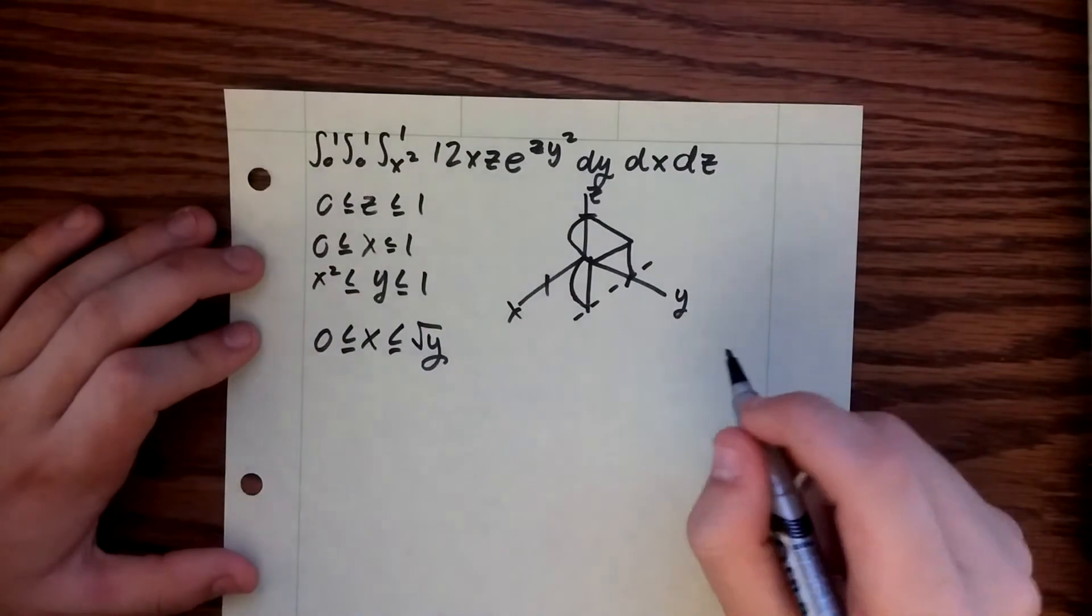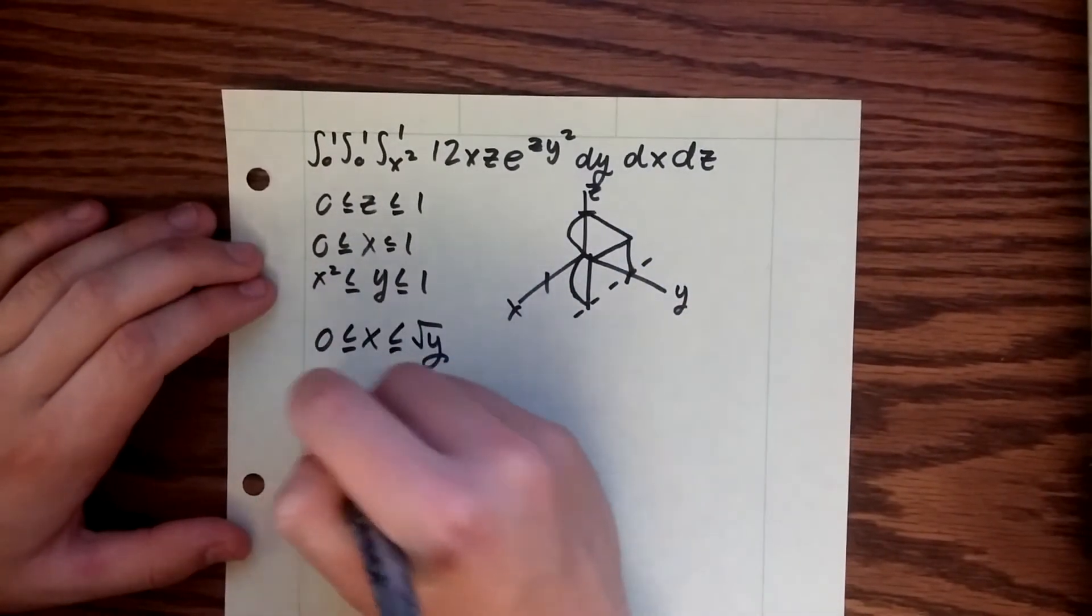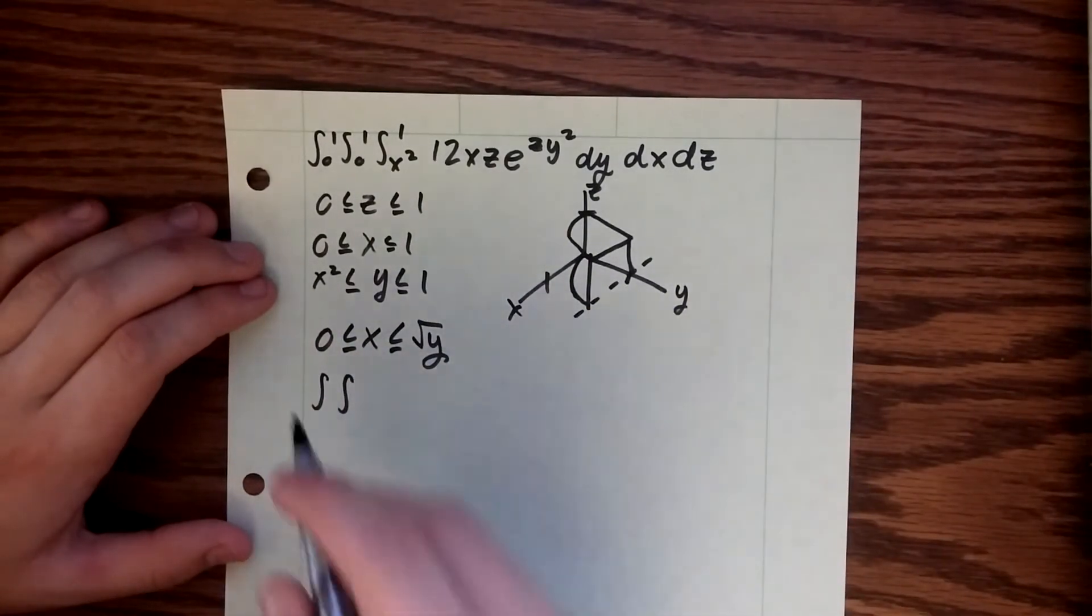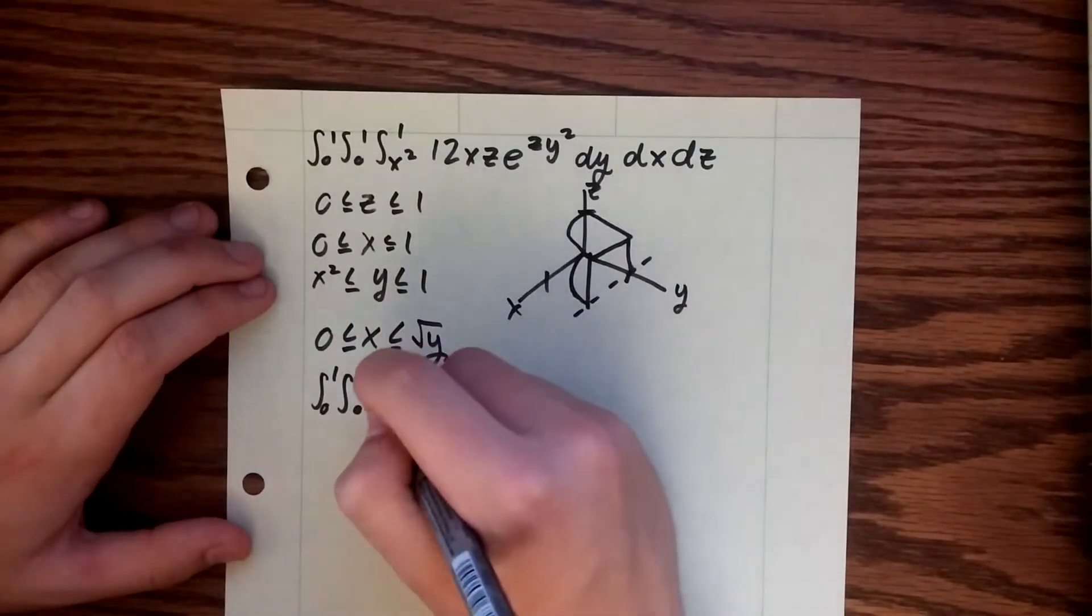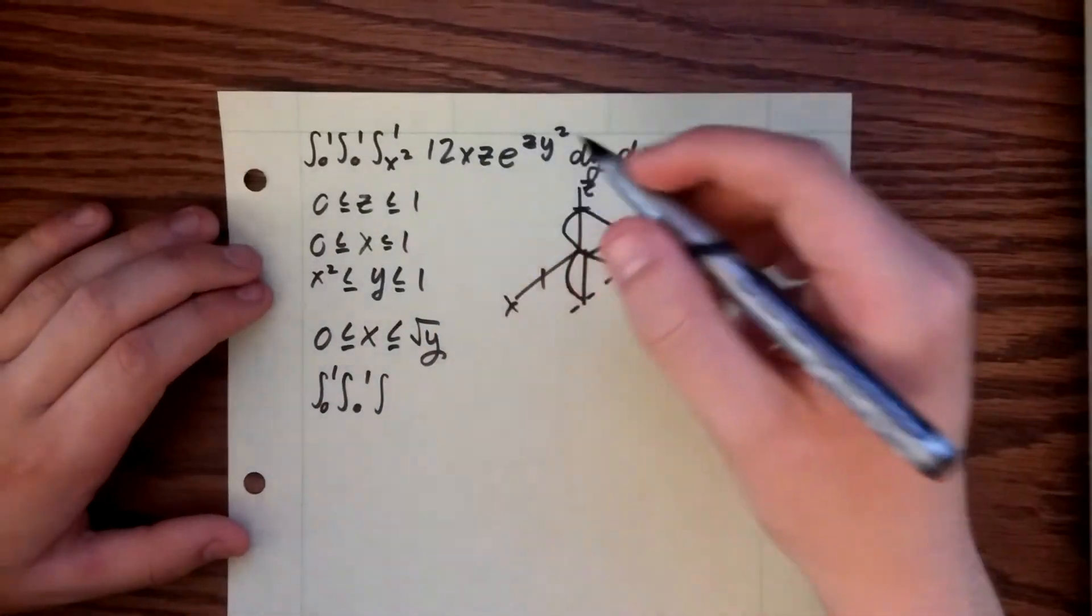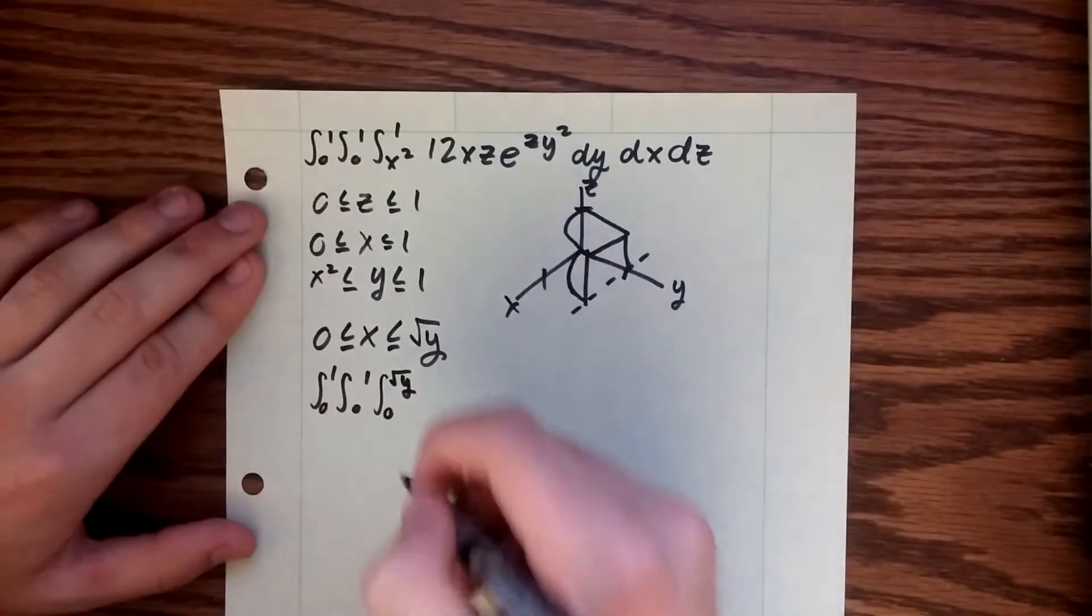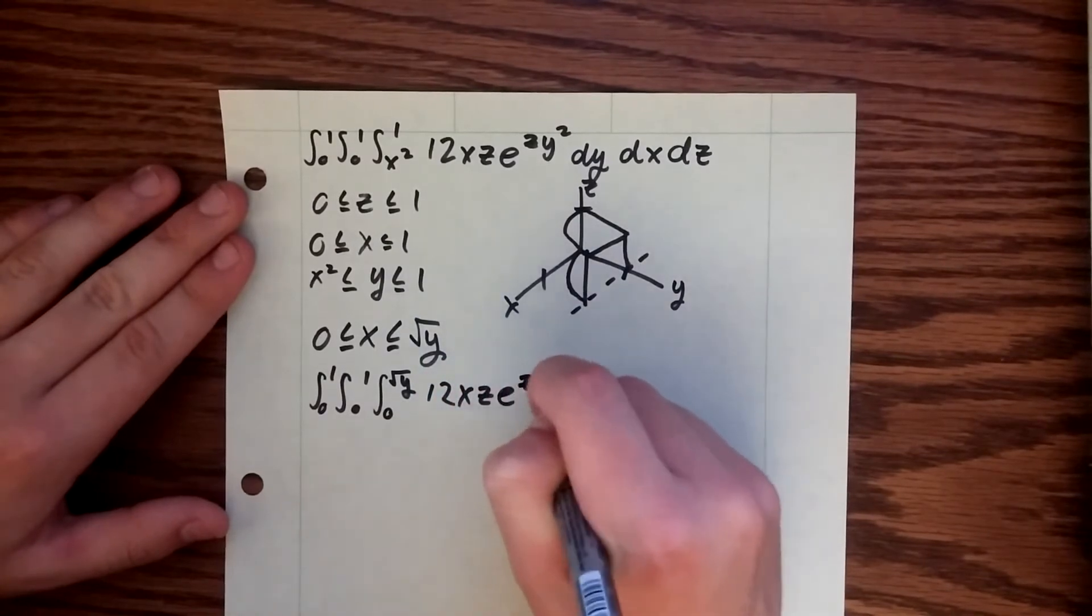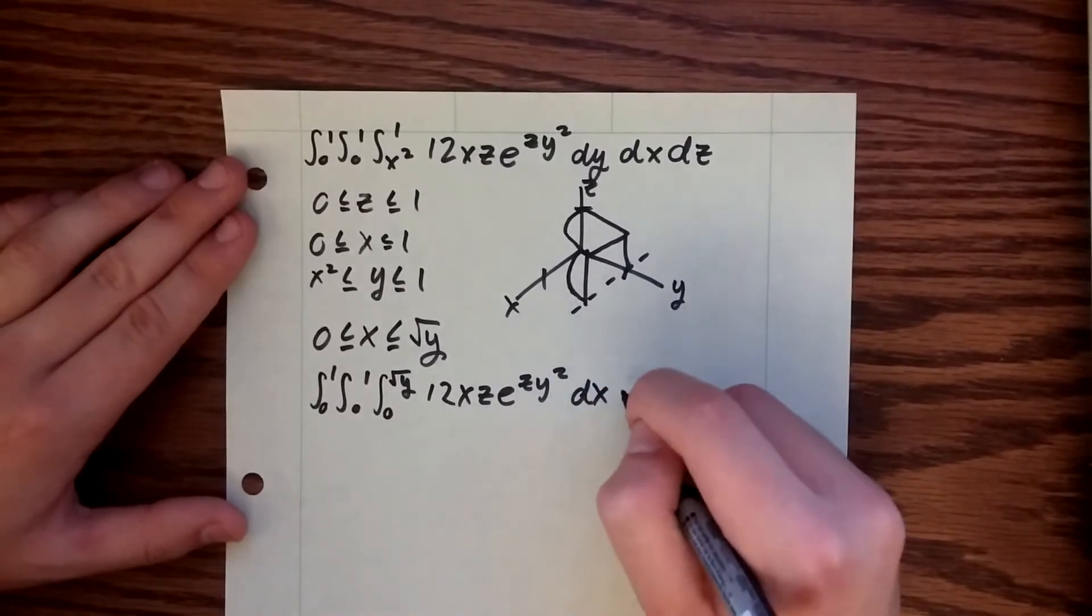So next we're just going to set up the triple integral with our new bounds. Remember, now z and y both go from 0 to 1, and then we're going to use this as our new bounding function for our x integral. Let me just write our function in as usual with our new order of integration with the dx first.